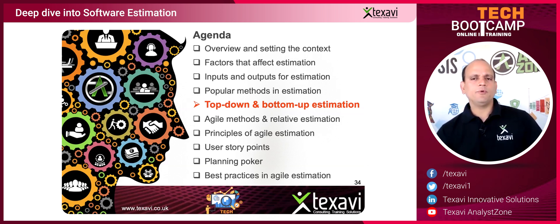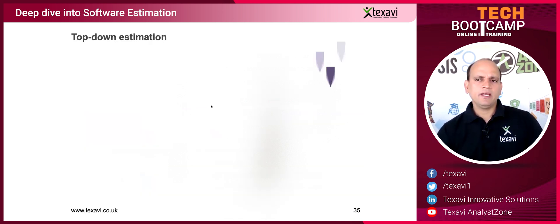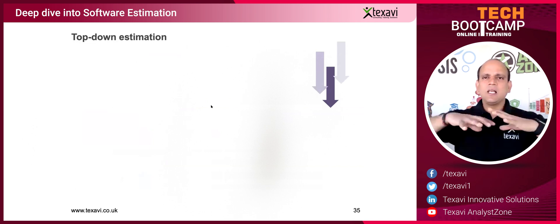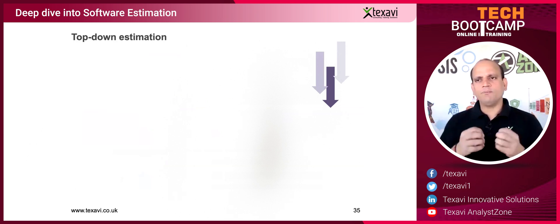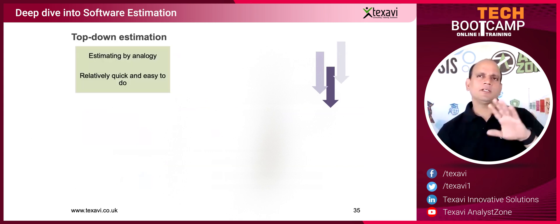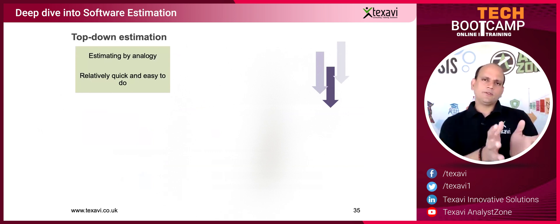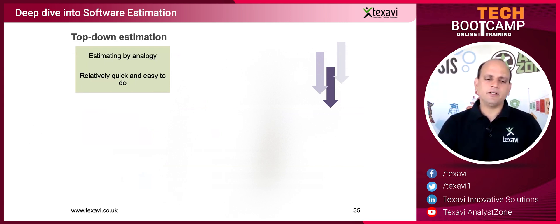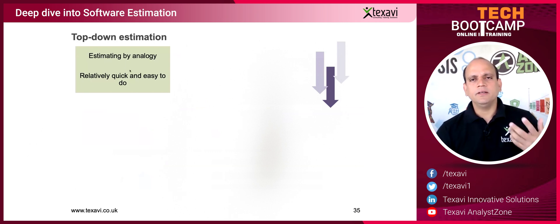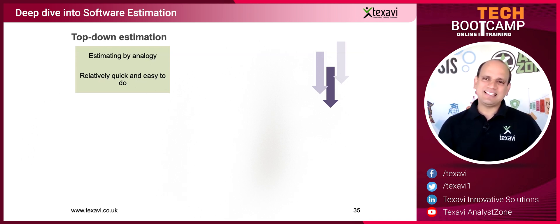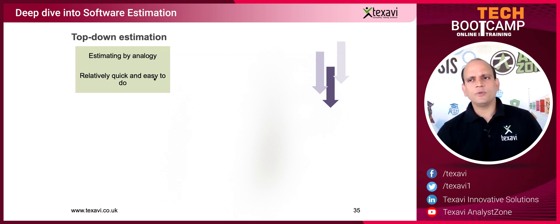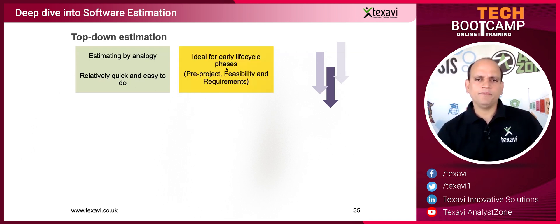Today we're going to delve deeper into top-down and bottom-up estimation. Top-down estimation looks at the big picture view and tries to break it down into parts — this is the kind of functional decomposition aspect. You can also look at something as a competitive benchmark and analyze it, saying this could be a similar size so it would cost this much and take this much effort. People call this estimating by analogy — comparing an existing project with something you already did before, assessing size based on prior knowledge. Since it's based on comparison, you don't have to get into the details, making it relatively quicker and easier.